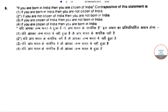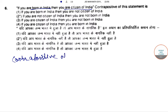Let's solve this question from the Joint Entrance mathematics paper 2019. If you were born in India, then you are a citizen of India. The contrapositive of this statement is what? We can write the contrapositive: the contrapositive of P implies Q is not-Q implies not-P.